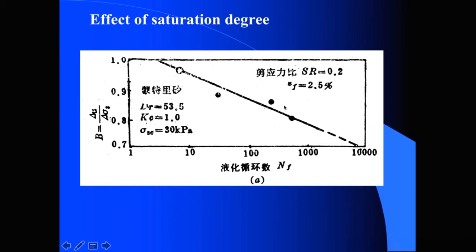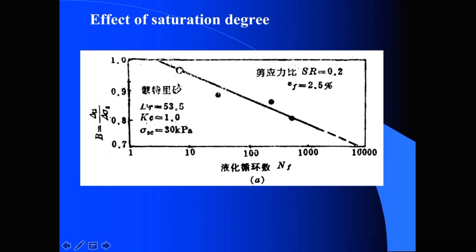Looking at this data point and the fitting line: the horizontal axis is the cyclic number of cyclic load required to cause liquefaction. We can find that a higher saturation degree requires fewer cycles of dynamic load to liquefy, meaning higher saturation degree leads to easier liquefaction.